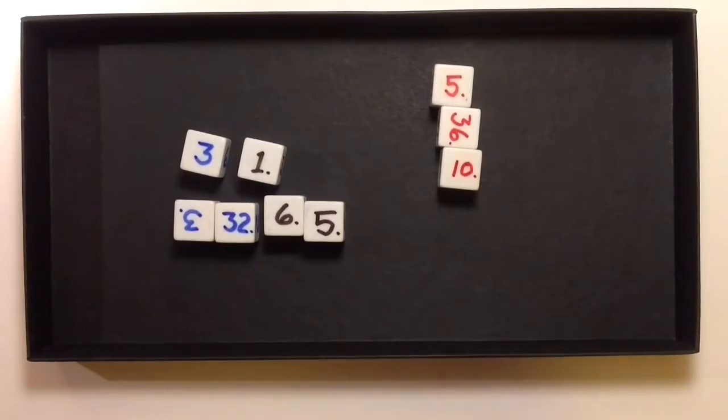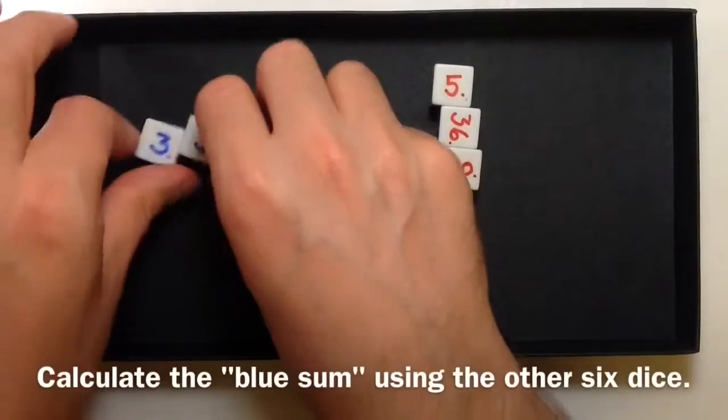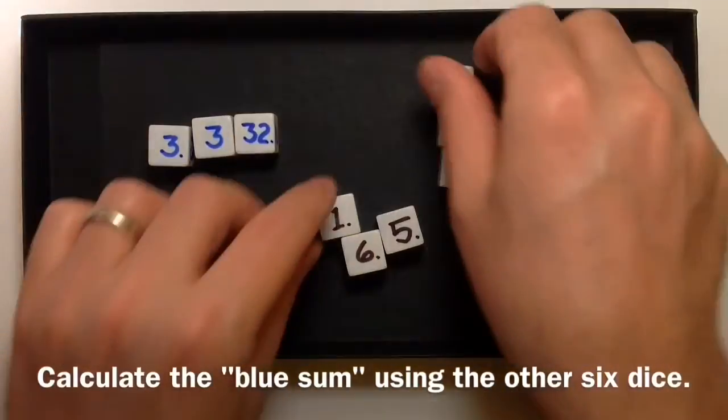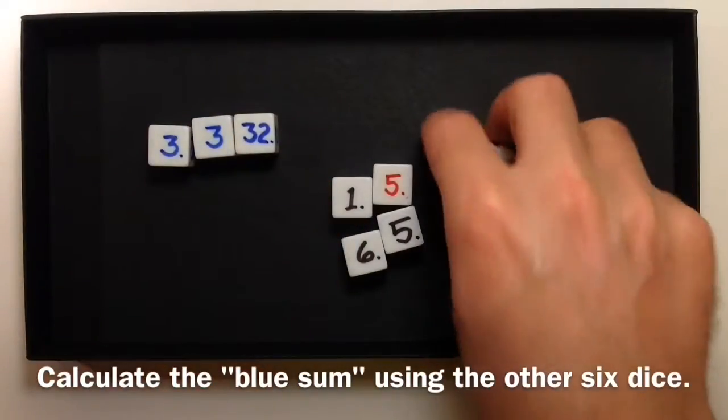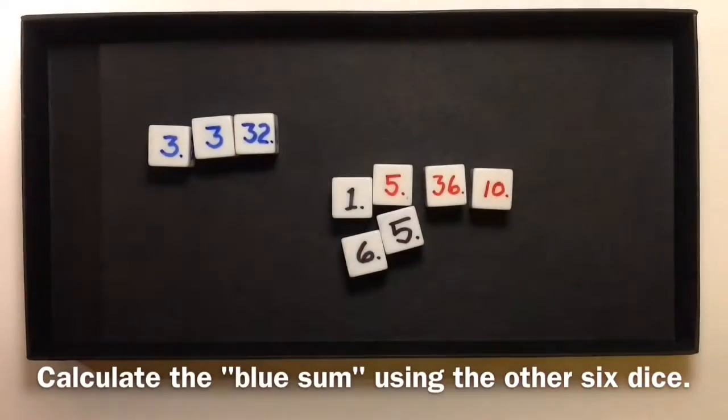It's called Trio because then we can add up the numbers on the blue dice. So we have 38, and then I'd like to try to use all six of the other dice to calculate 38.